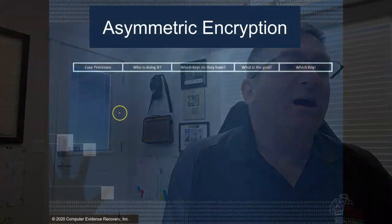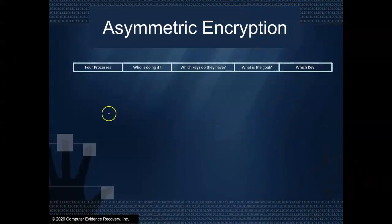And there's four distinct possibilities or states that we could have within asymmetric encryption in the way that we need to use it for what we're talking about here. So let's have a look at the four different processes that we're concerned with.